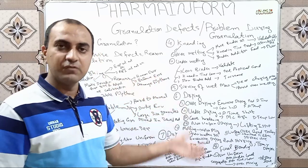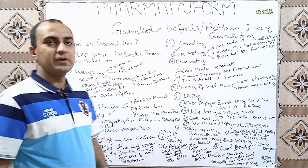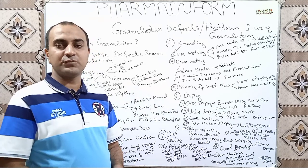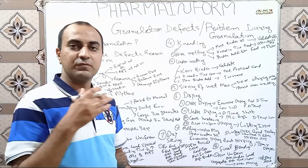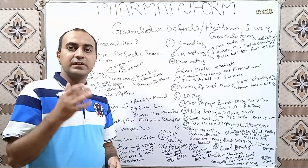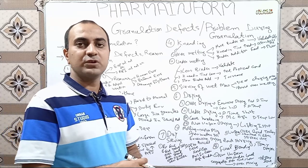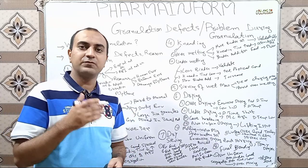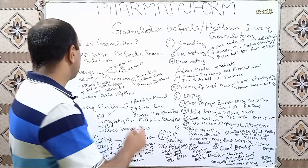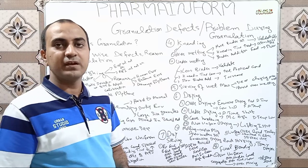We will discuss defects during all these three methods. First we will start from wet granulation, beginning with the first step which is sieving. If you are not aware with the steps of granulation and want to watch a complete video, the link is given in the description. The complete playlist link is given in the description so you can watch the whole granulation process from that link.